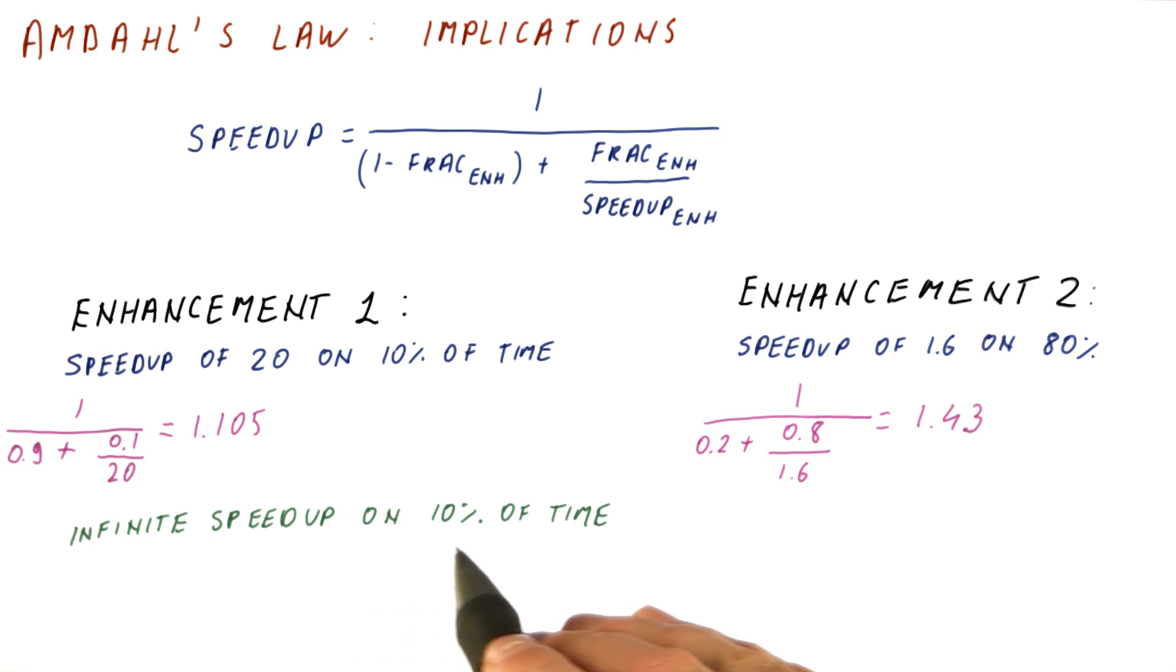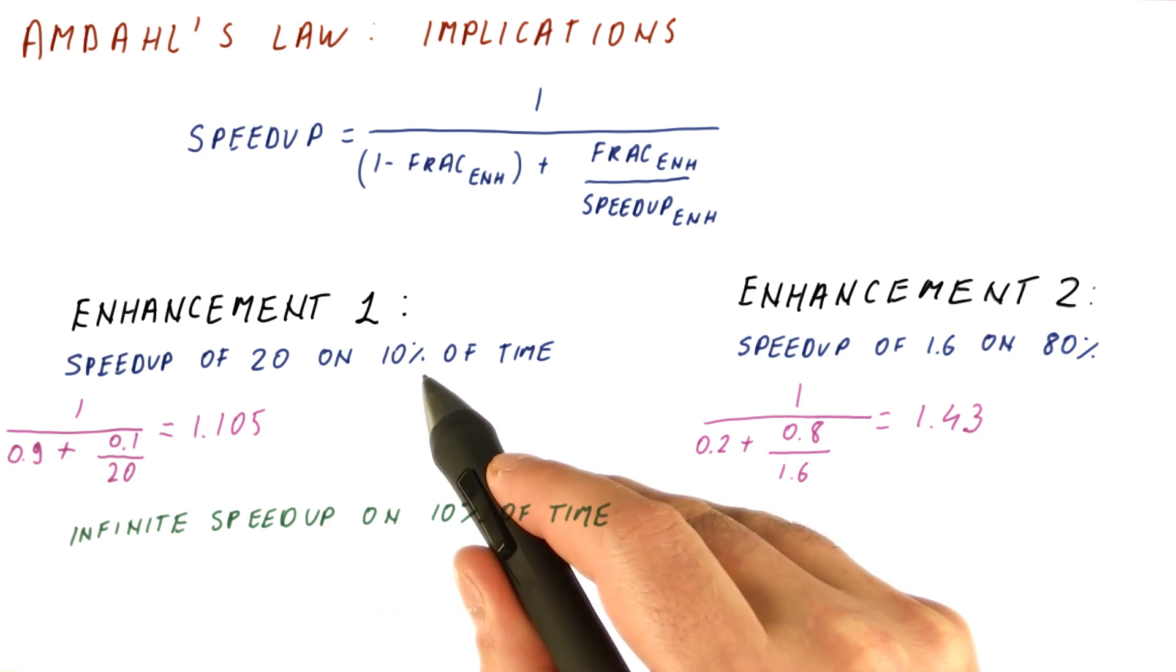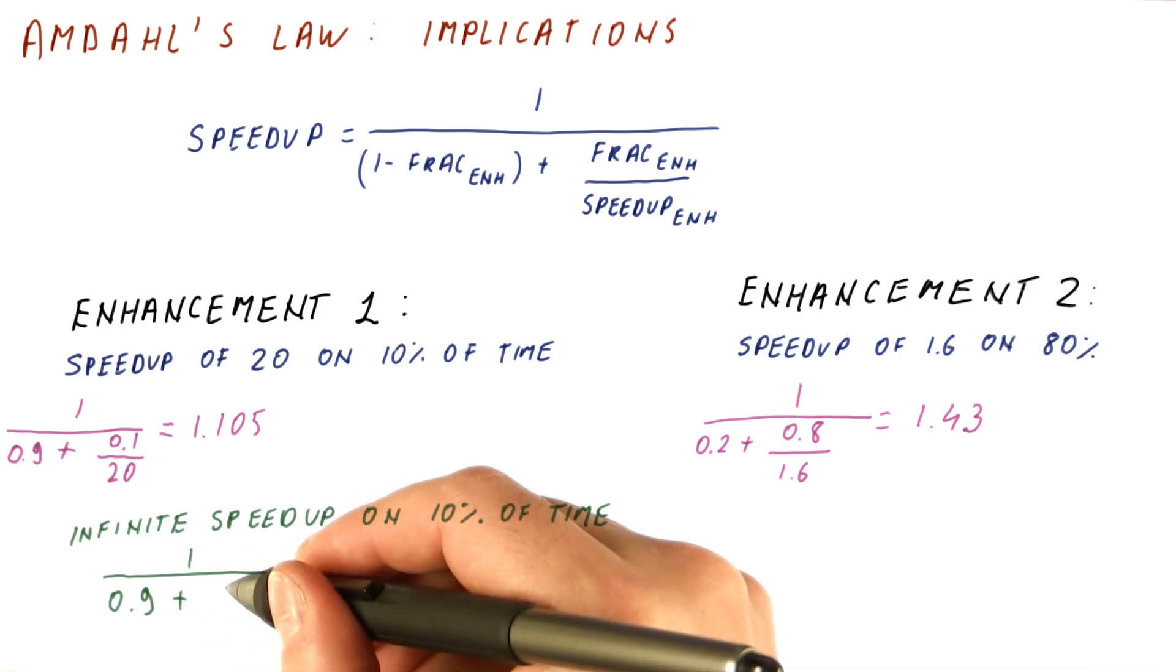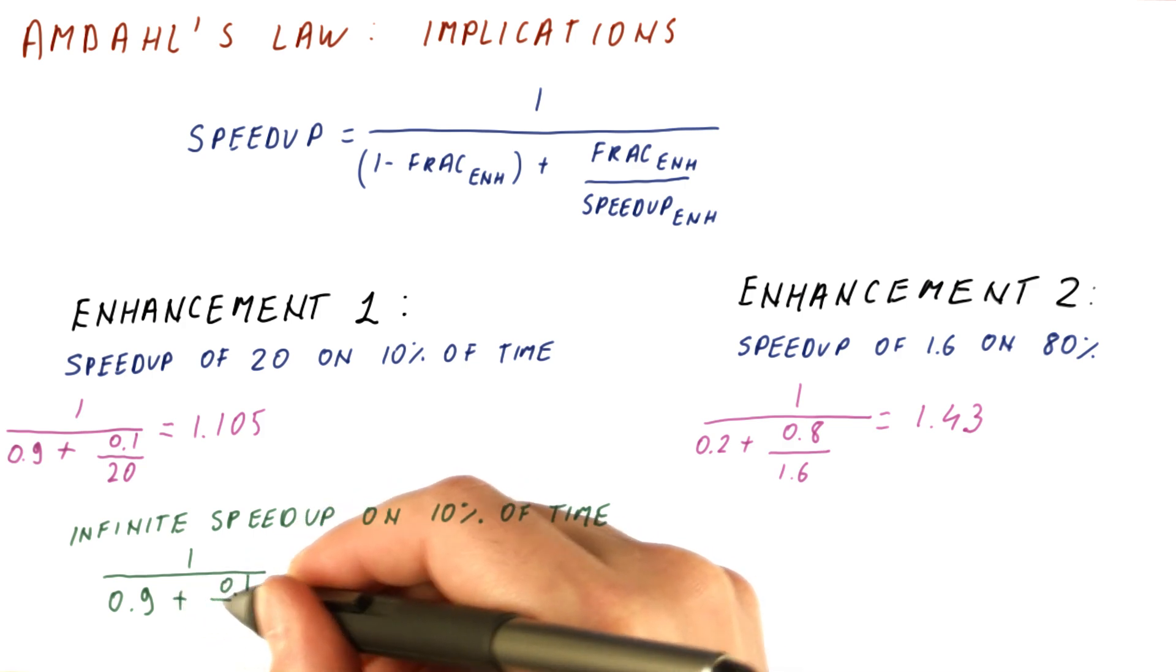Even if we had an infinite speedup on this 10% of execution time, we would get 1 over, unenhanced is 0.9. Enhanced is 0.1 divided by infinity, so it becomes 0, and we still get 1.111.